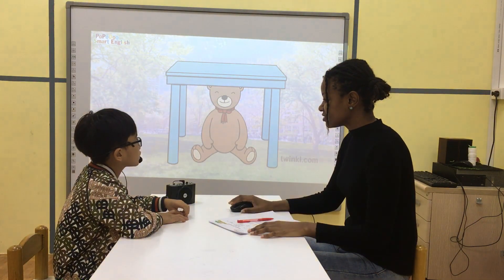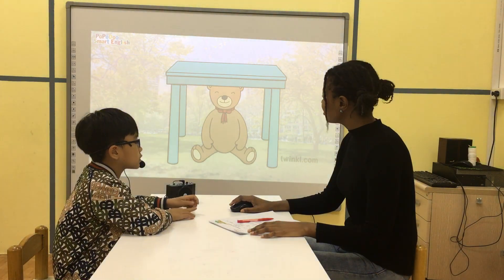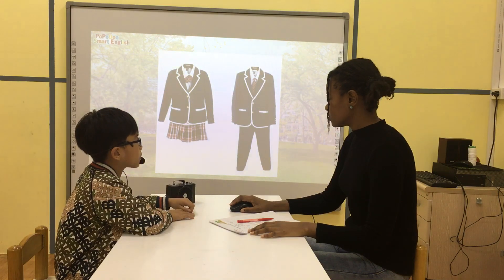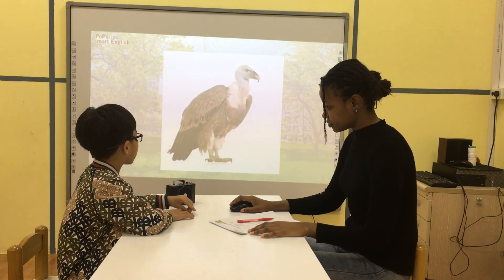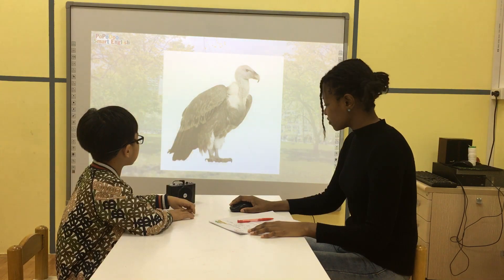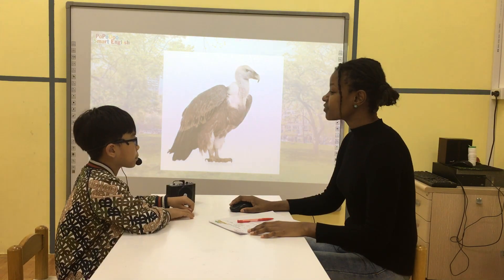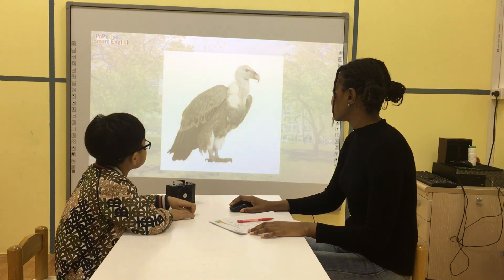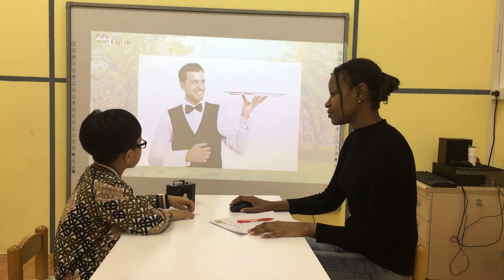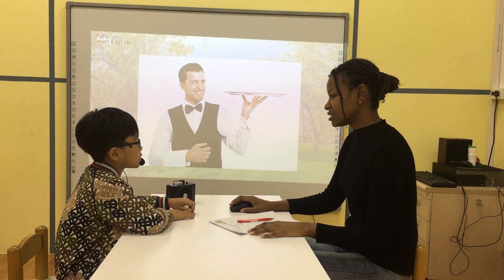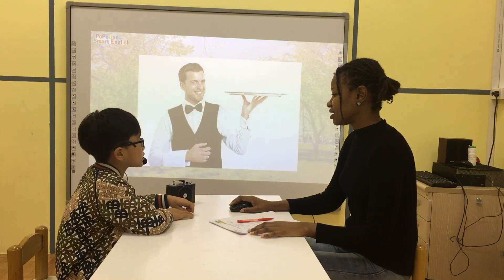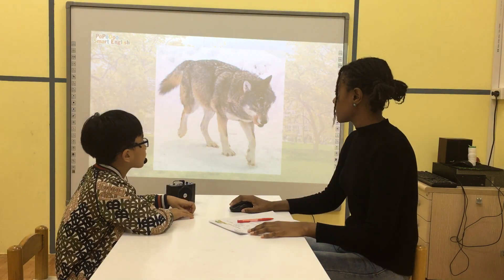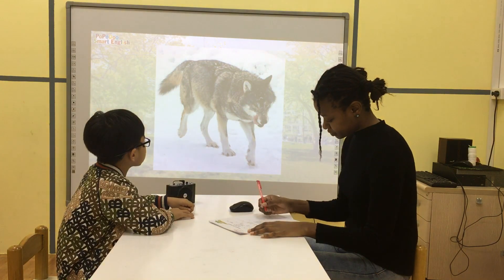It's under the table. The table. What's this? It's a uniform. What do you see? I see a vulture. Vulture. Who is he? He is a waiter. He is a waiter. What do you see? I see a wolf.